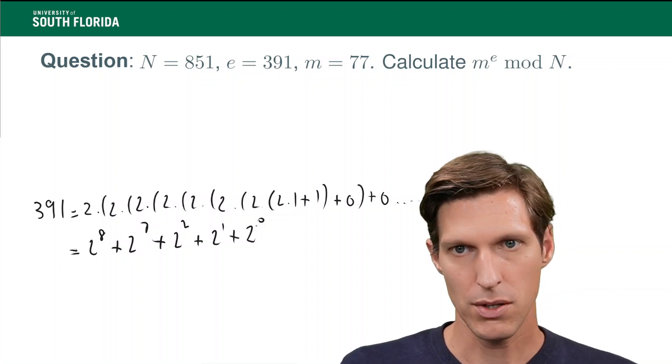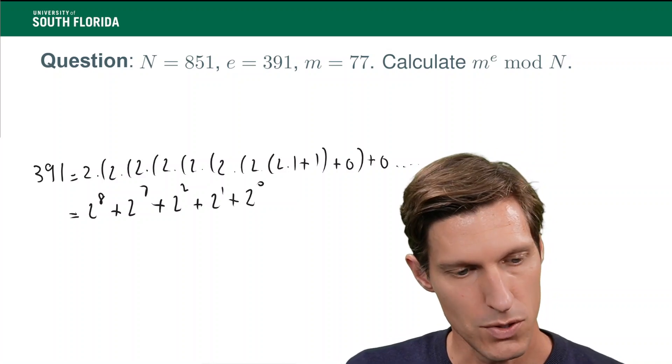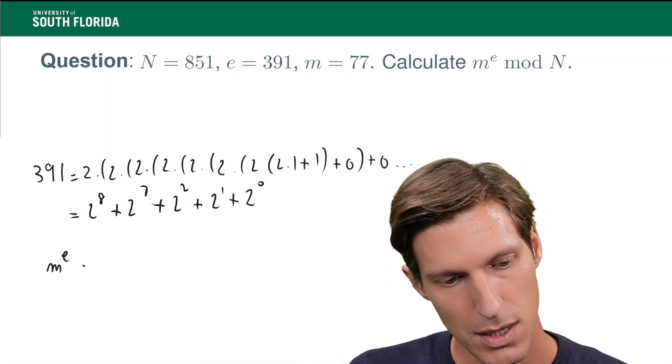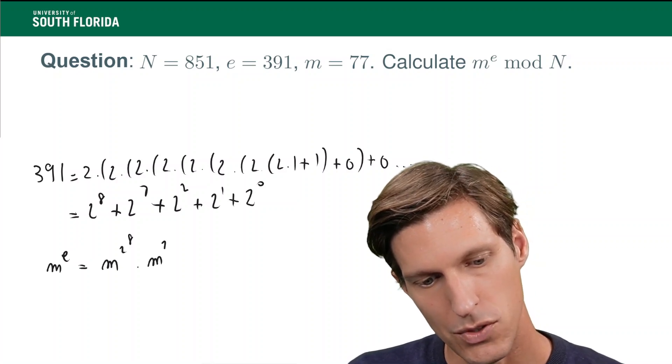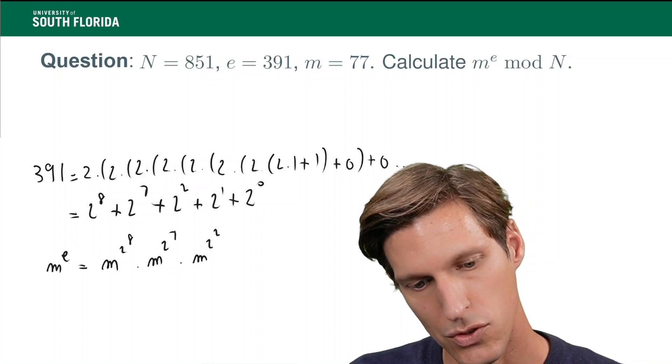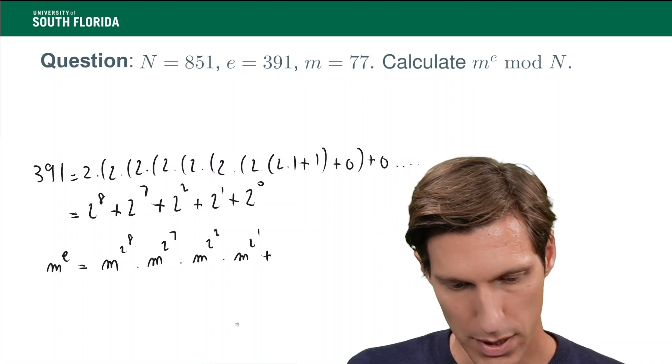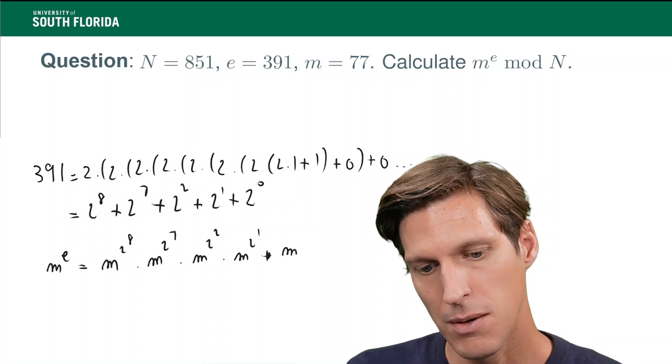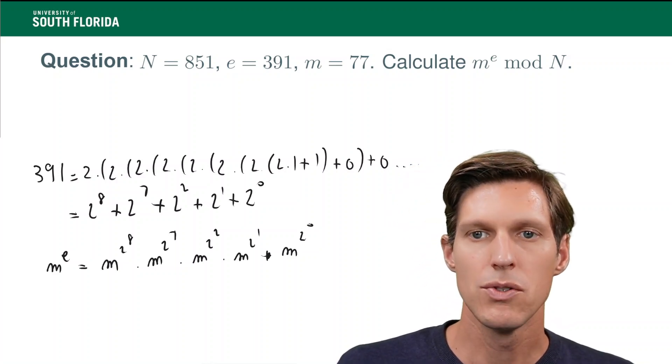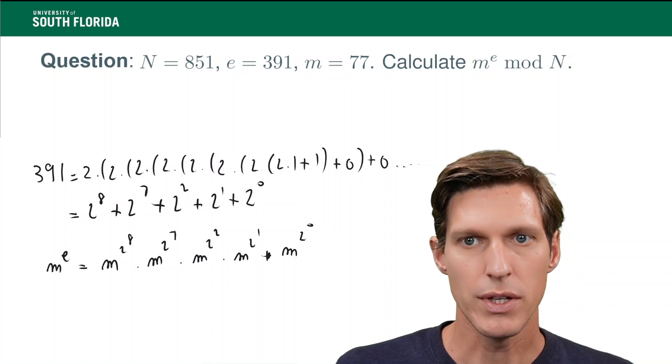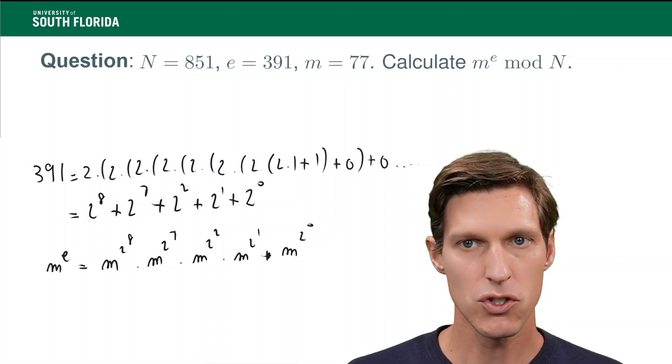And we're going to use that to calculate m to the power of 391, because what we have now is that m to the e is equal to m to the two to the eight, times m to the two to the seven, times m to the two to the two, times m to the two to the one, times m to the two to the zero, which really is m. So, what we need to do first is calculate those m to the two to the i for i equals zero to eight, and how we do this is just by repeated squaring of m.